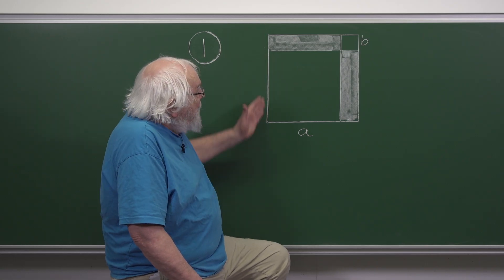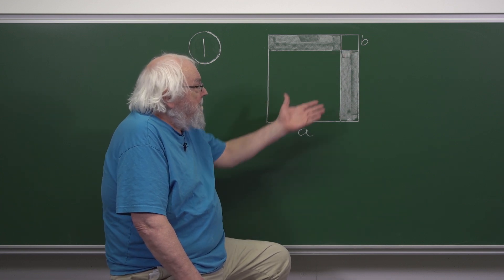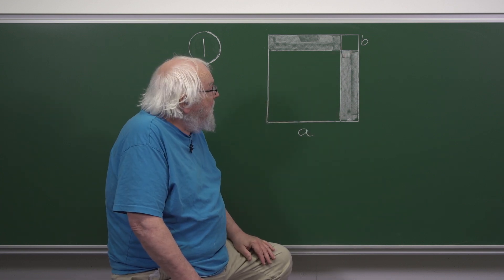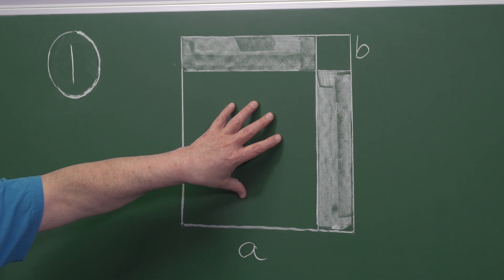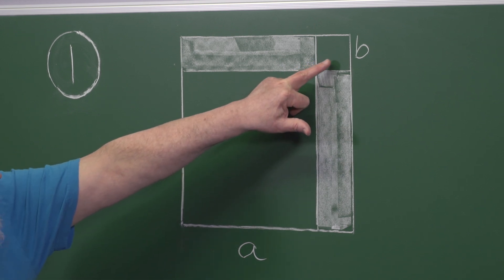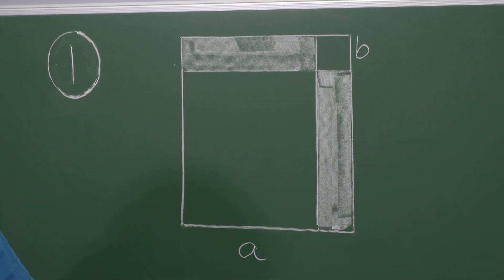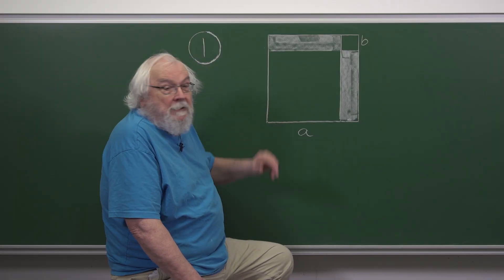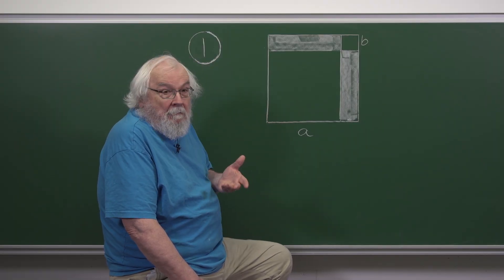In this question we have a square dissected in this way. We have a square here of side A and a square up there of side B. We're told the shaded area as a number.